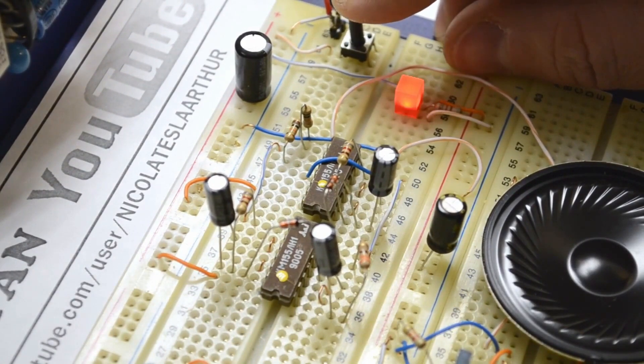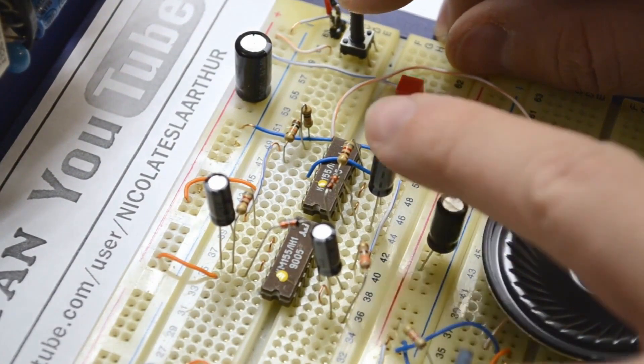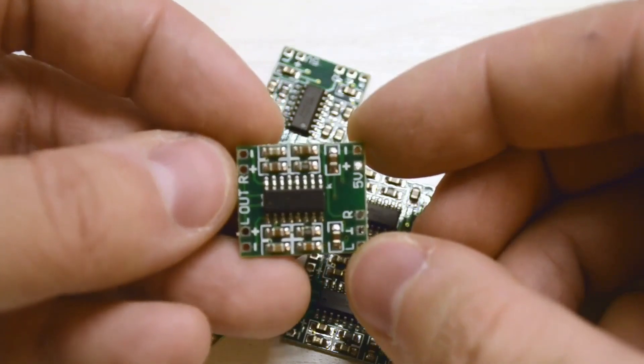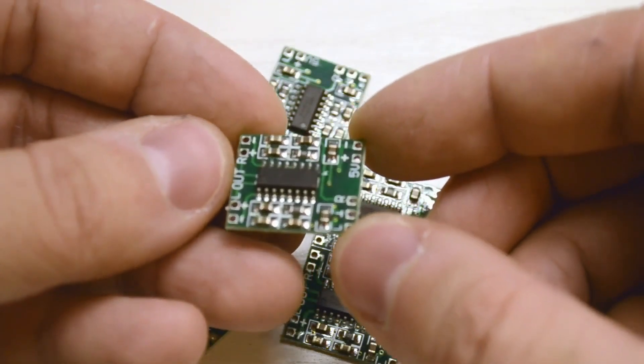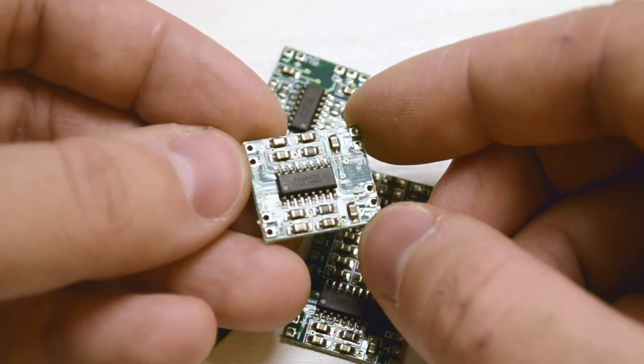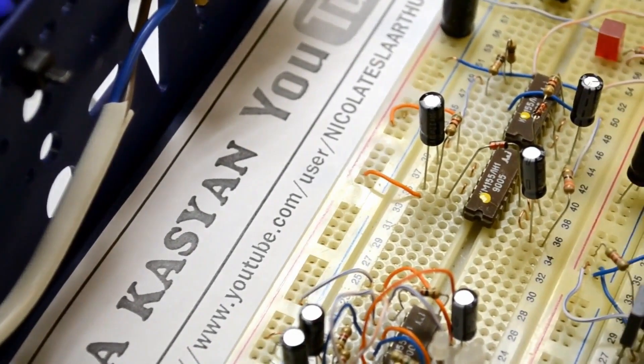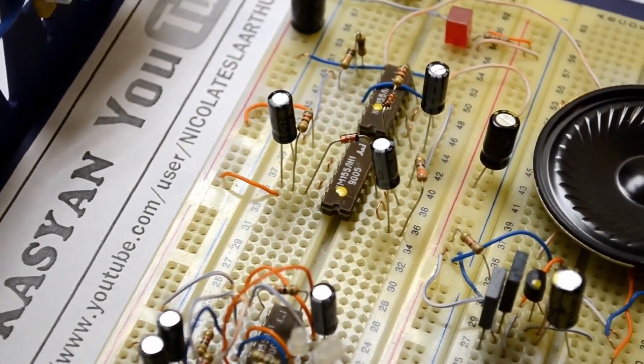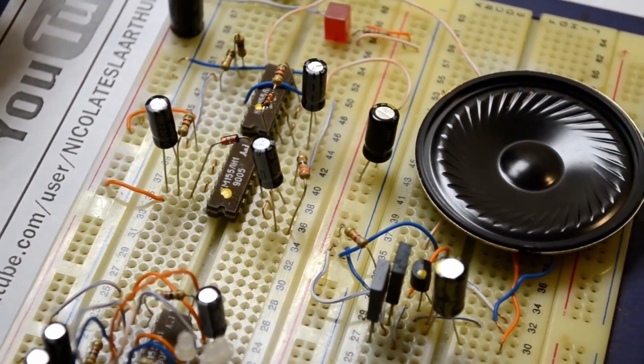The signal amplifier is built on transistors, but if you wish, you can replace it with this kind of class D amplifier module, especially if, like me, you bought about 10 of them for some reason and now don't know what to do with them. The circuit can be powered by any 5-volt power source, such as a phone charger.